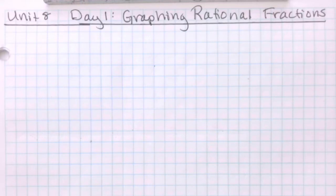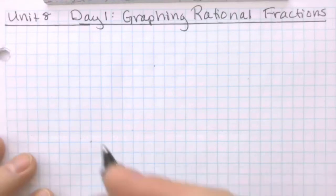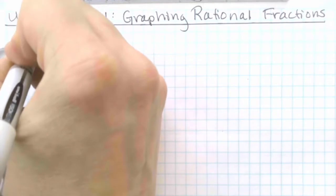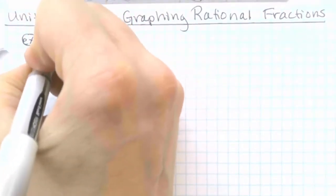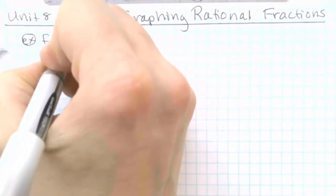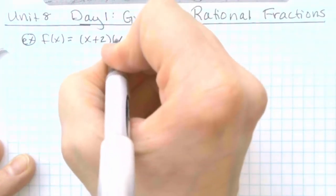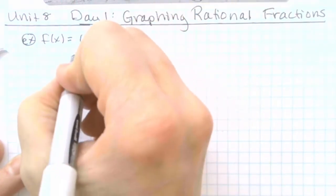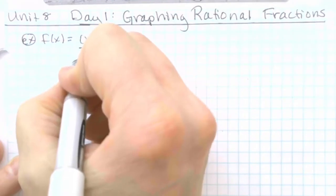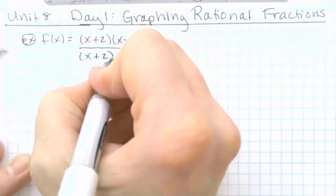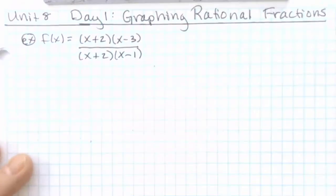Almost everything I'm going to show you today is things that we've already learned. We're just going to review them and start to pull multiple things together. For this first section, we're going to use the example f of x equals x plus 2 times x minus 3 over x plus 2 times x minus 1.